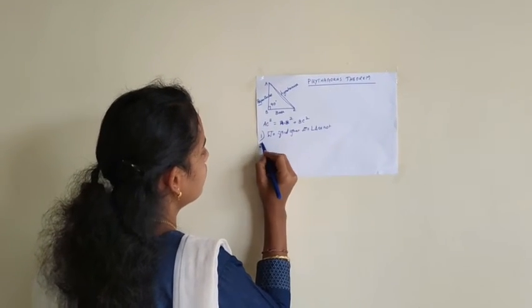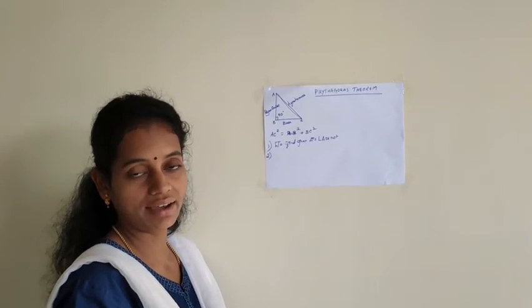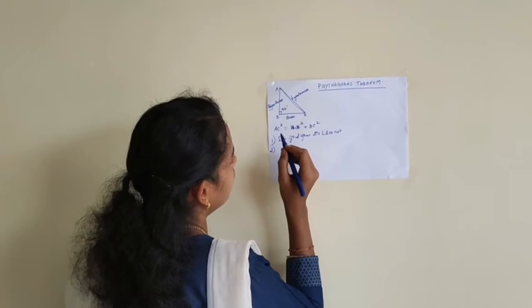In the same way, if you know any two sides and we don't know one side of a right angle triangle, we can use this Pythagoras theorem.